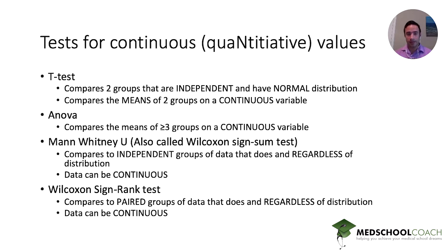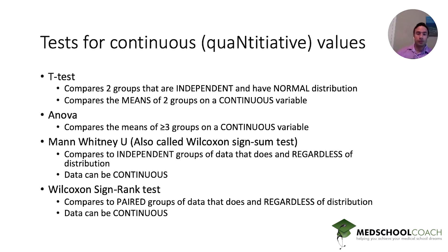An ANOVA test compares the means of greater than or equal to three groups of a continuous variable. This causes confusion because test takers often see more than three groups and go right to the ANOVA test. But ANOVA specifically requires greater than or equal to three groups with a continuous, quantitative variable being measured. You must have both features present to use the ANOVA test.